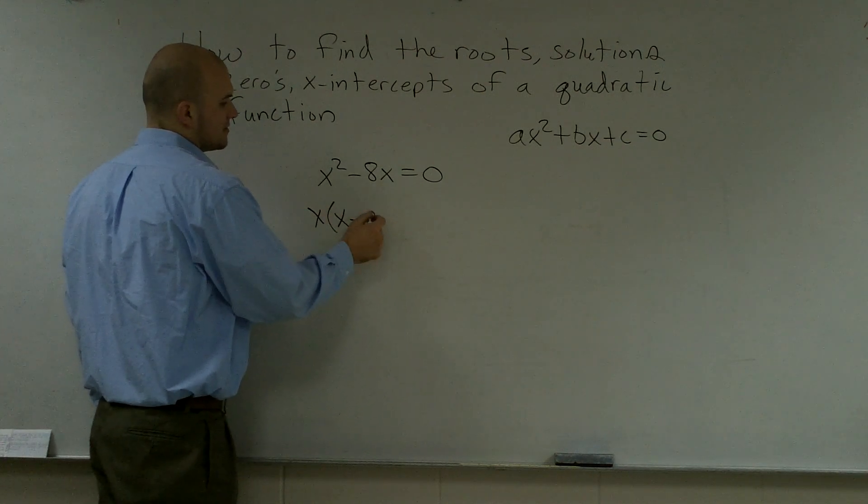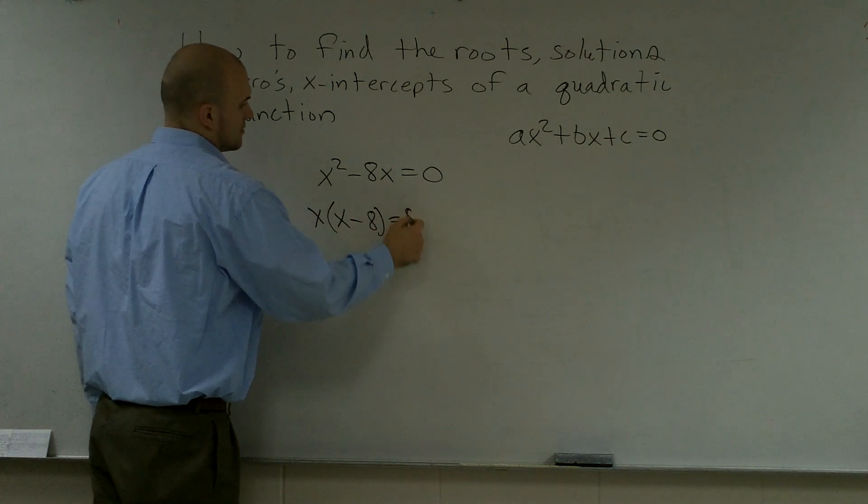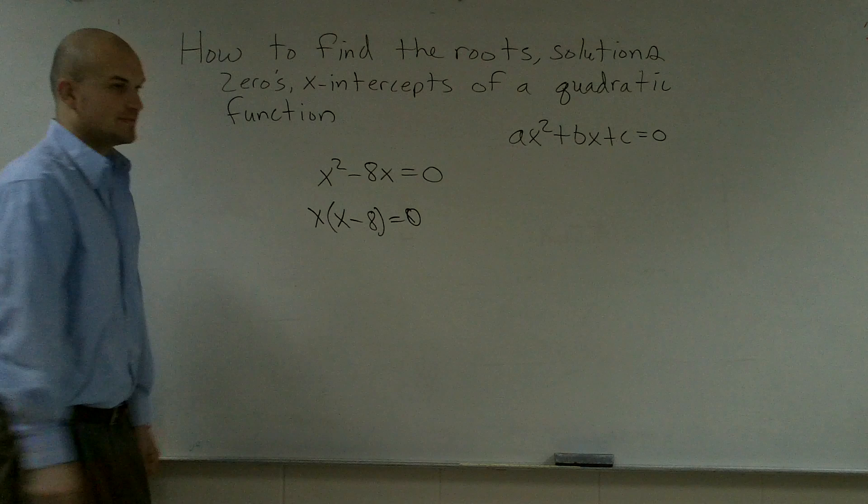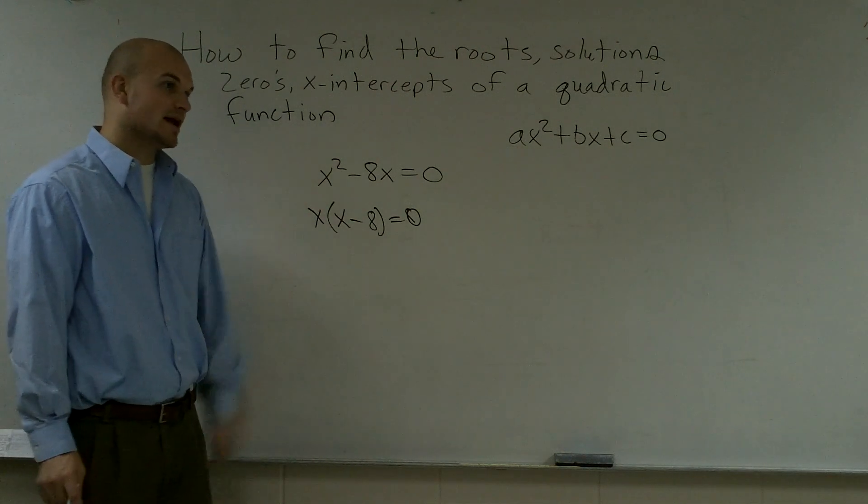When I factor out an x, I'm left with x times x minus 8 equals 0. So I took an x out because they both shared an x.